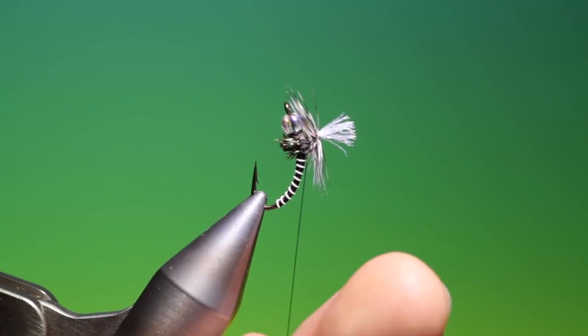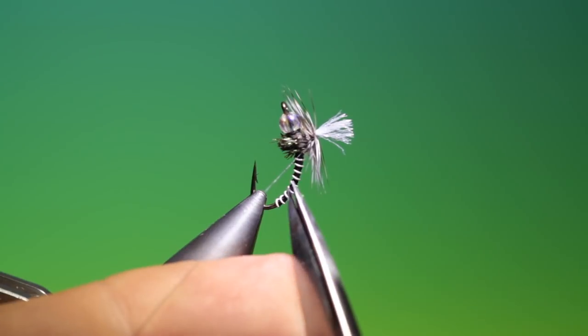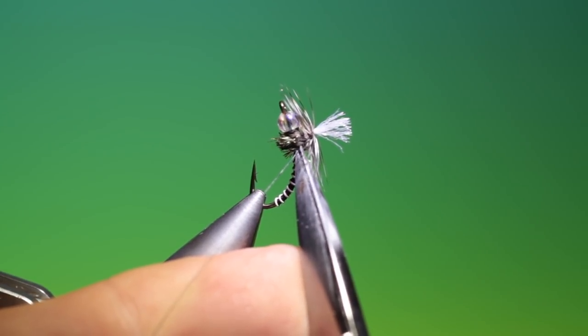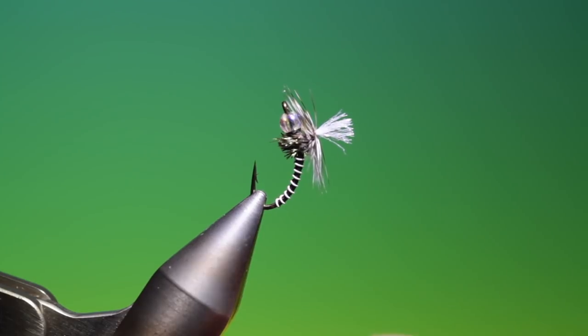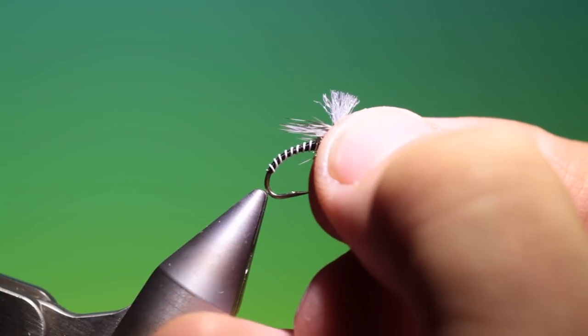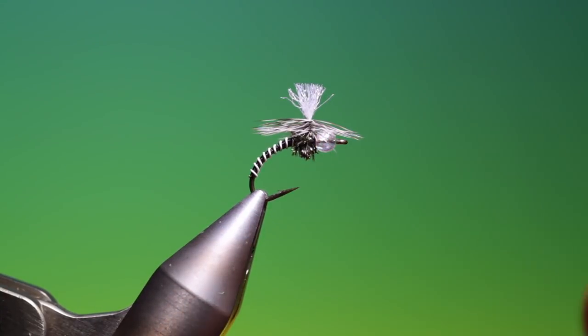And that's it. Remove that tying thread carefully. There we are. I'll turn it back around. There we are. There's the finished zebra parachute. And as usual, if you enjoy the videos, please subscribe and like. Thanks for watching.